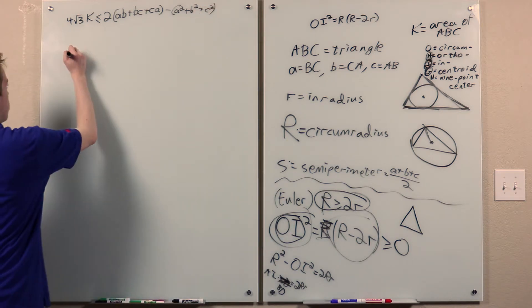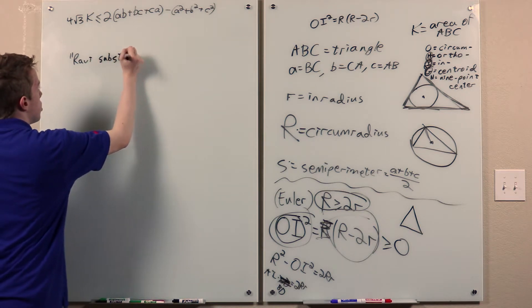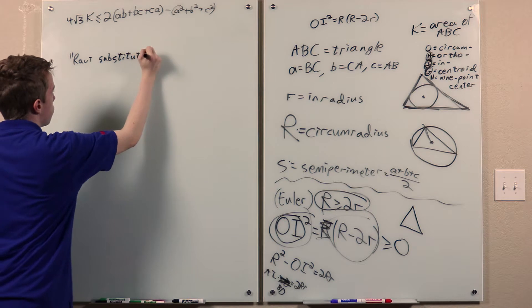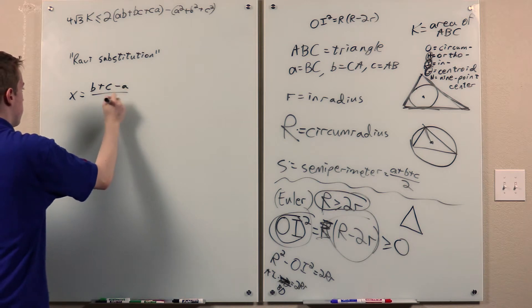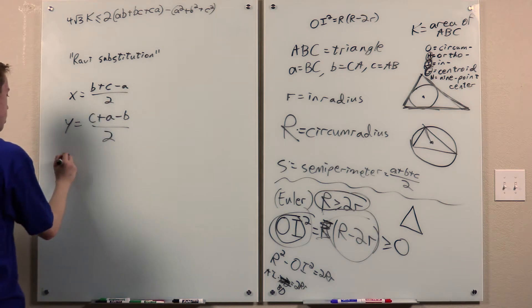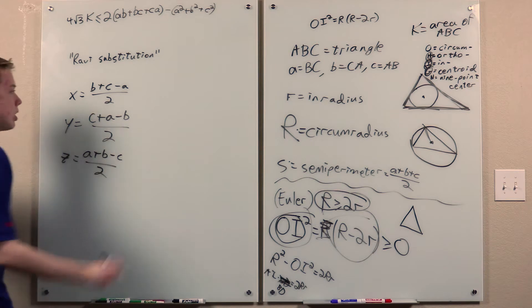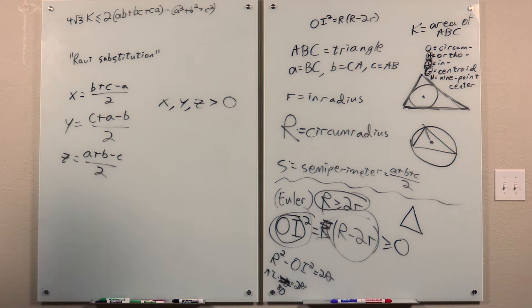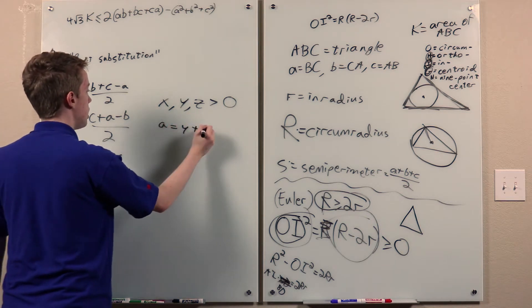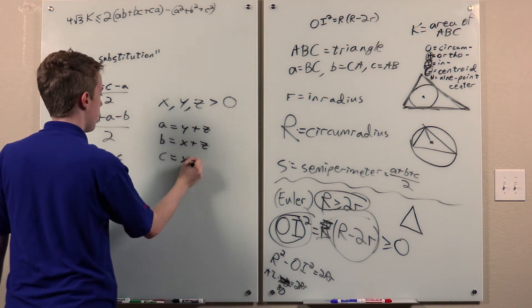So we're going to use the so-called Ravi substitution, which is the use of the triangle inequality. Where, specifically, we take x to be this, Y to be this, and z to be this. Then by the triangle inequality, x, y, and z are greater than zero. And, furthermore, we have a equals y plus z, b equals x plus z, and c equals x plus y.